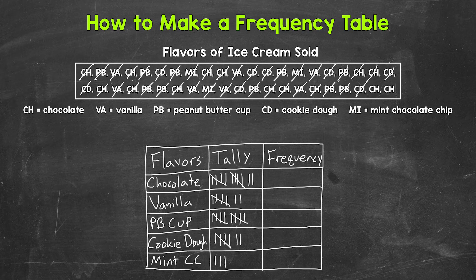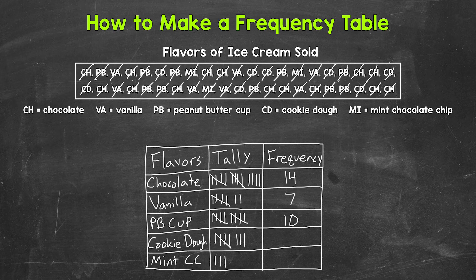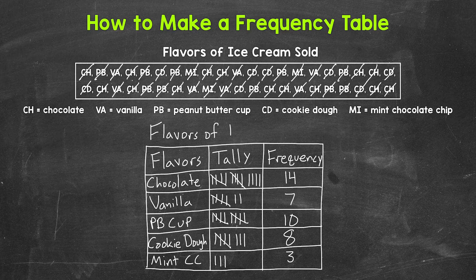Now that we have everything tallied, let's do our final counts for the frequency column. Chocolate: 14. Vanilla: 7. Peanut butter cup: 10. Cookie dough: 8. And mint chocolate chip: 3. So chocolate was sold 14 times, vanilla 7 times, peanut butter cup 10 times, cookie dough 8 times, and mint chocolate chip 3 times. Let's put a title up here: "Flavors of Ice Cream Sold."